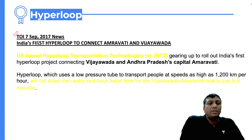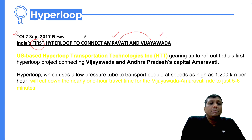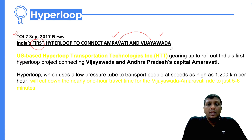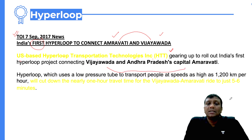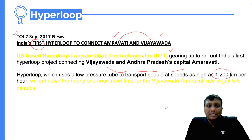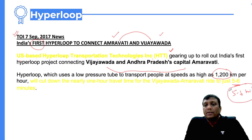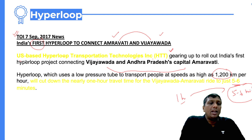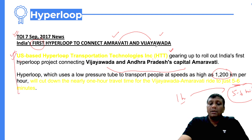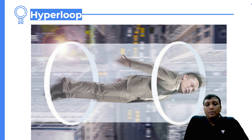An article in the Times of India discussed the first hyperloop train that will connect Amaravati to Vijayawada in India. A US-based company, Hyperloop Transportation Technologies Inc., will work with India to run a hyperloop train between Vijayawada and Andhra Pradesh's capital, Amaravati. With a speed of 1200 kilometers per hour, the one-hour journey between Amaravati and Vijayawada will be completed in just five to six minutes.